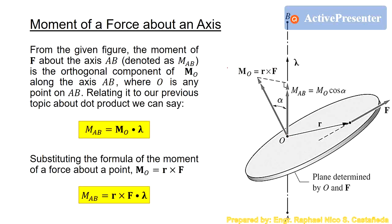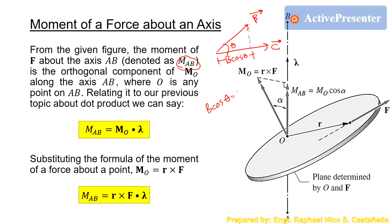From the given figure, the moment of F about axis AB, denoted as M_AB, is the orthogonal component of M_O along axis AB. Recalling the dot product: the orthogonal component of vector B along vector C is B cosθ, which equals B dot lambda_C. Here B is the moment of the force about point O, and lambda_C is the unit vector of the axis directed along the moment axis.